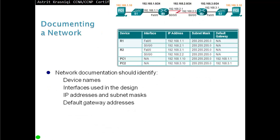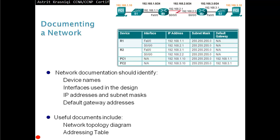Network documentation should identify device names, interfaces used in the design, IP addresses, subnet masks, and default gateway addresses. Documents include a network topology diagram — both logical topology (how data moves around the network) and physical topology (how cables are laid down on the network).